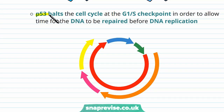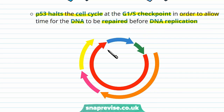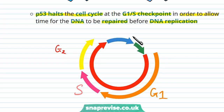The p53 protein also halts the cell cycle at a particular point — the G1 to S checkpoint — and keeps it there to allow time for DNA to be repaired if it has any mutations, before the DNA replicates. In the growing and dividing phase of the cell cycle we have G1, S, and G2. The p53 stops the cycle at this point between G1 and S to make sure the DNA is correct and doesn't have any mutations. If it doesn't, we can go ahead and replicate it to form two new healthy cells.